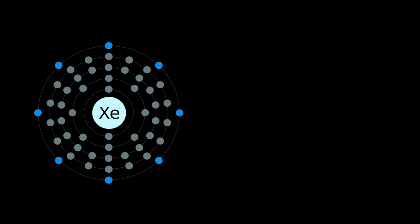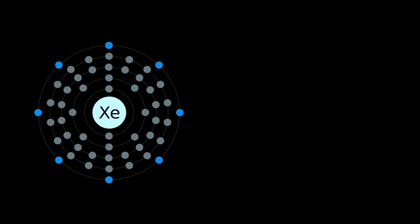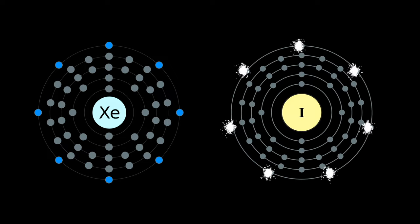Xenon, with its perfectly filled shell of eight electrons, does not want to give away or borrow electrons. It's happy. Our previous element, iodine,